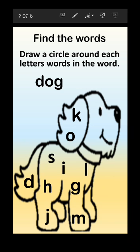The first letter of 'dog' is D, so we have to circle letter D. Now let's find out where letter D is inside the dog picture - it's here. The next letter of dog is O - we have to find letter O, it's here. Now the next letter is G - dog - and we have to find letter G, it's here.